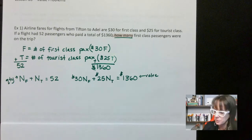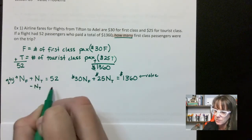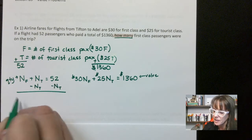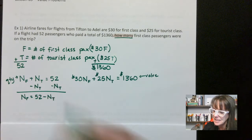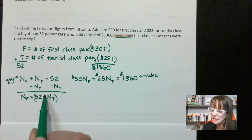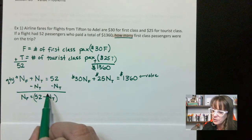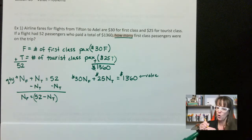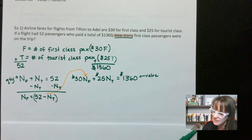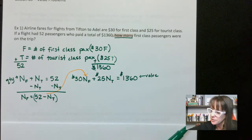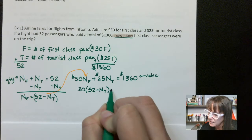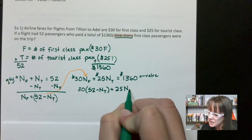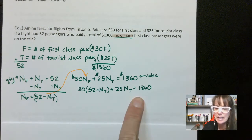I think we should use substitution to solve this. We have to get either N sub F or N sub T by itself. So minus N sub T: N sub F equals 52 minus N sub T. Now all I have to do is plug that in right where there's N sub F.